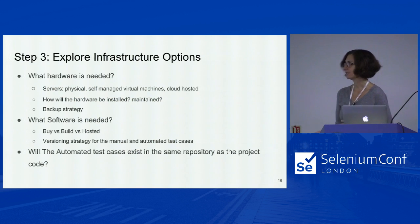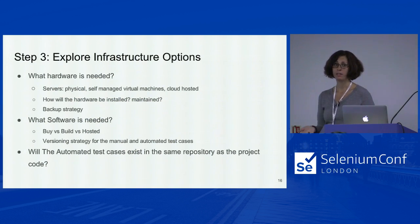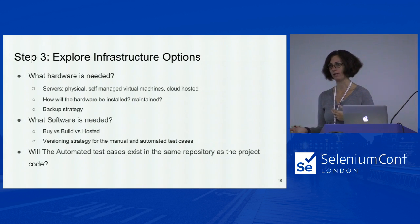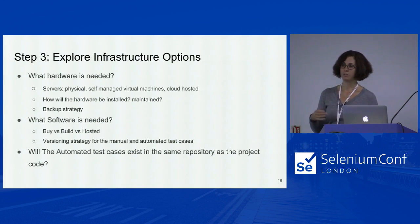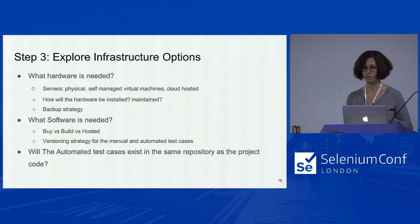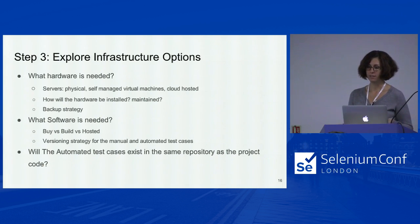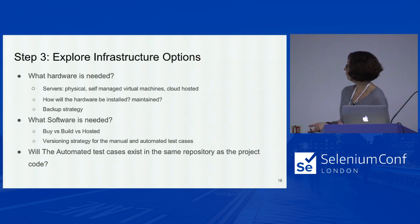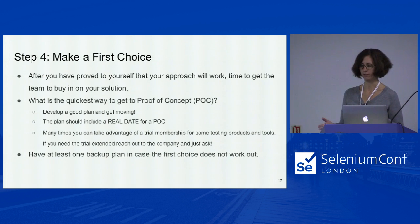Exploring infrastructure options: realistically, steps two and three really go together. Because at the point that you're looking at frameworks, you're also looking at — am I going to host it? Is it going to be cloud hosting? What about virtual machines? What software is really needed? And bigger questions like: do I want to keep the automation in the same repository as the project code? These are all things to consider while you're talking about frameworks.